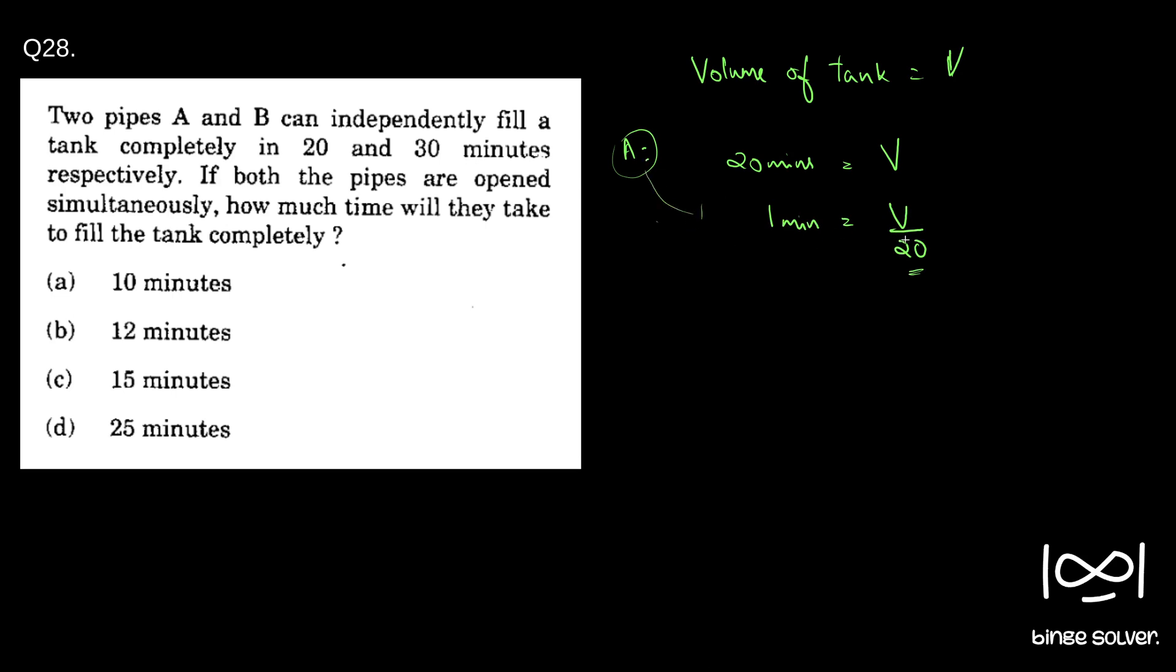For speed of A, it is for one minute V by 20. Similarly for B, if you see, it is V by 30. So in one minute B fills V by 30 volume of tank and in one minute A fills V by 20 volume of tank.